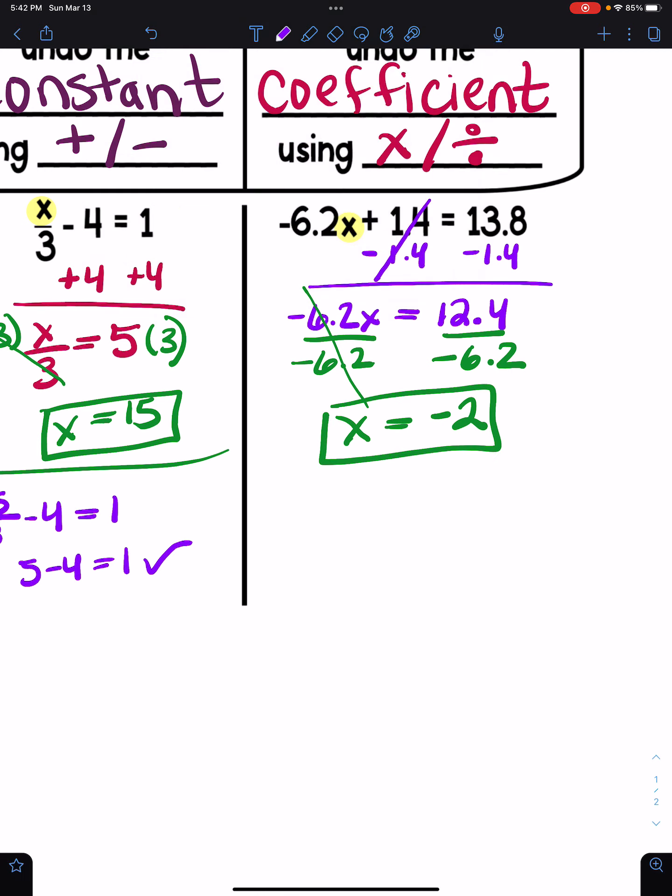I can check my work to make sure it's right. Negative 6.2 times negative 2 plus 1.4. Is it going to be 13.8? Let's find out. This is going to be a positive 12.2. I think that's a 1.4, isn't it? I just can't see it because I crossed it out above.